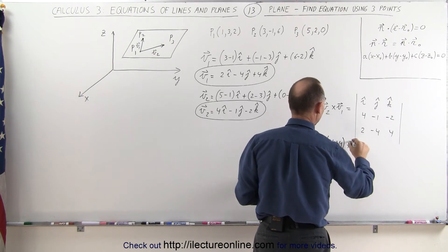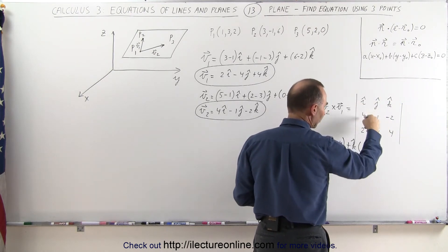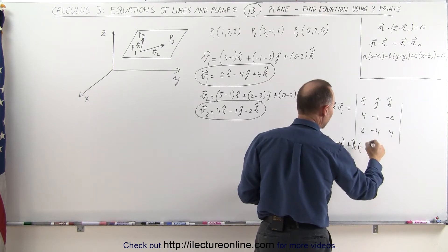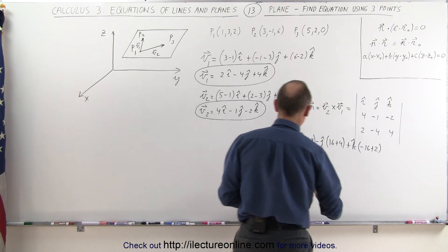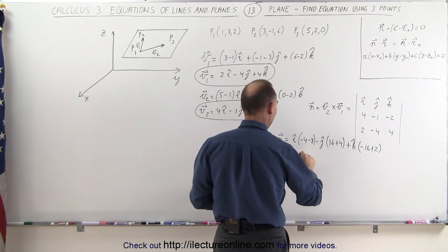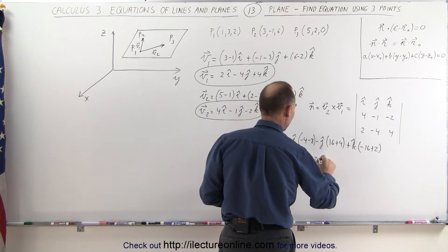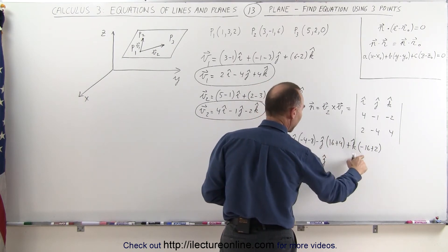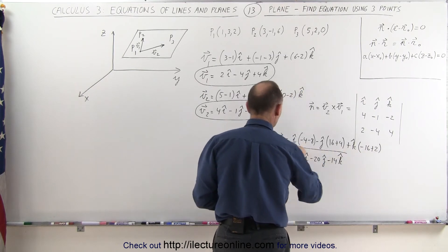And then plus the k component times - get rid of this and this - we get those four elements. That's 4 times a minus 4, that's minus 16, minus a minus 2, that's plus 2. Simplifying that, my normal vector now becomes the following: I have minus 12 in the i direction, I have minus 20 in the j direction, and minus 14 in the k direction. Here's my normal vector.